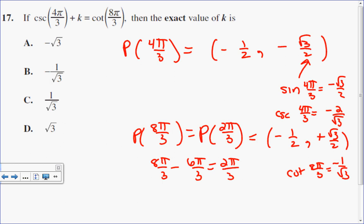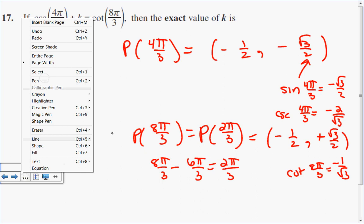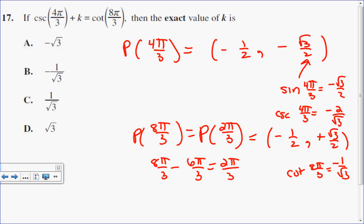So let's put all of this together now that we know each of the values. I have cosecant of 4π over 3, which is negative 2 over root 3, plus a k value equals cotangent of 8π over 3, which is negative 1 over root 3. I think what I want to do is get rid of my fraction by multiplying everything in this equation by root 3. So I end up with negative 2 plus root 3k equals negative 1.